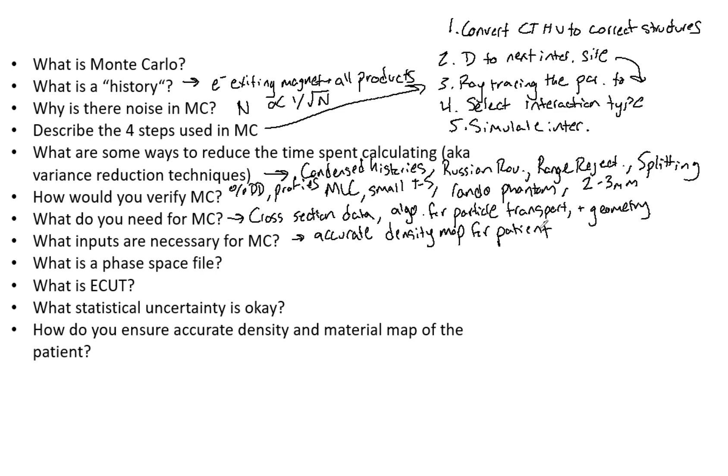What is a phase space file? This includes the particle type—now of course we have photons, we've got electrons—it also has the energy, the x, y, z position, and then also directional parameters.